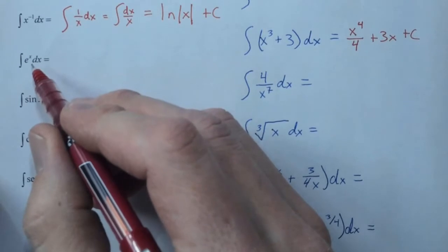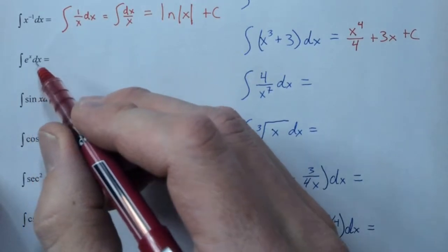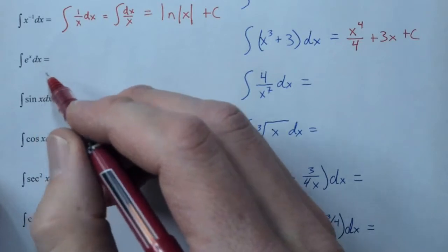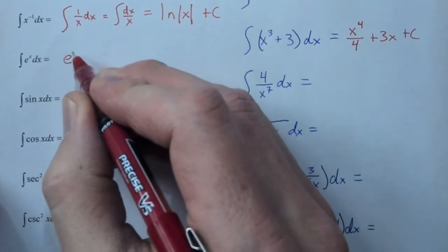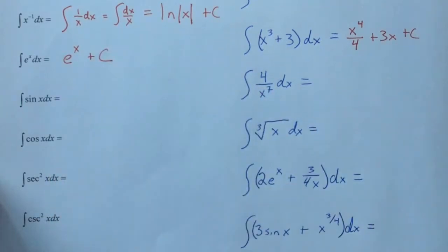e to the x. What's the antiderivative of e to the x? We know that e to the x derives to itself, so the antiderivative of e to the x will be e to the x, and of course we need our arbitrary constant.